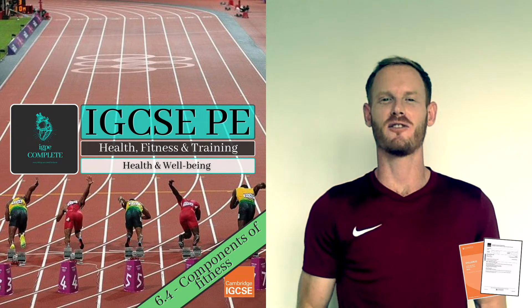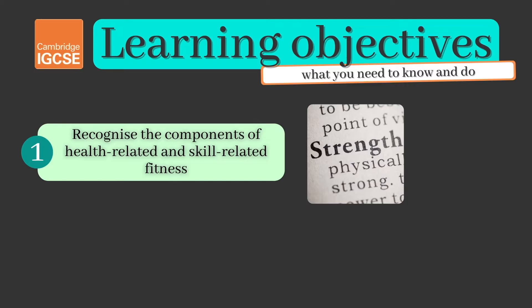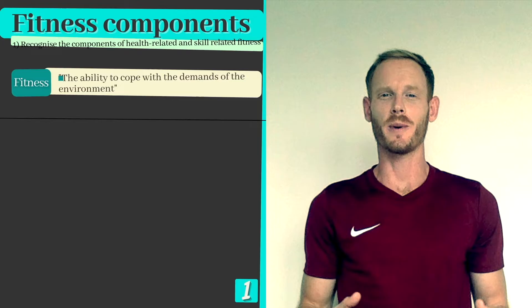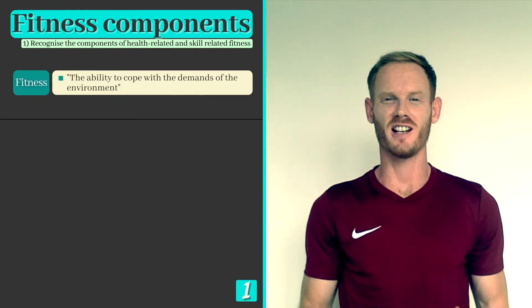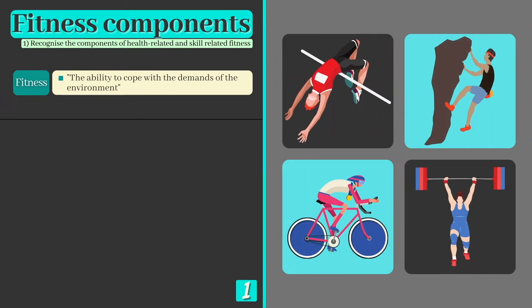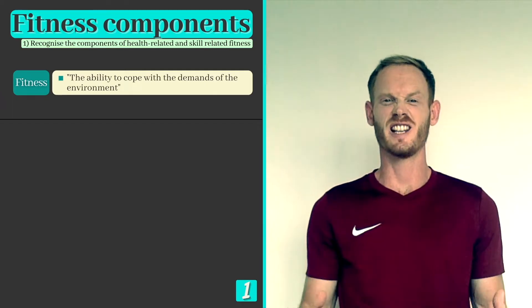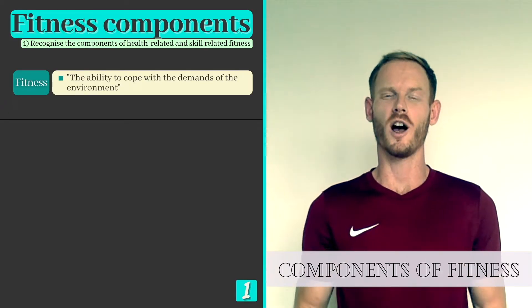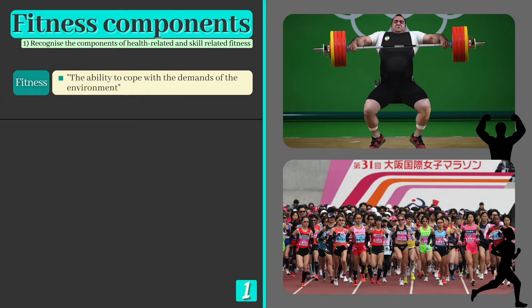As always we'll cover absolutely everything you need to know for your exam. Today you need to be able to recognise the components of health related and skill related fitness and to explain the links of these components to performance of sports and physical activities. In topic 6.2 we learned that fitness can be defined as the ability to cope with the demands of the environment. Environmental demands vary for all of us but are particularly high for elite athletes who require a specific set of finely tuned attributes if they are to perform at the highest level. These physical attributes are known as the components of fitness, and athletes rely on different components depending on the nature and requirements of their sport. For example, weightlifters need strength to be successful while marathon runners rely on endurance or stamina so that they can maintain pace over long durations.